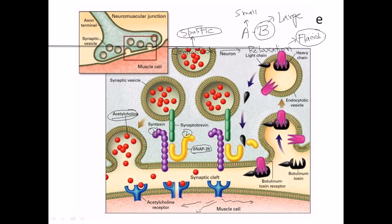After binding, a signal triggers invagination and vesicle formation through the process of receptor-mediated endocytosis. Once endocytosis is complete, the large B subunit remains attached to the receptor, while the small A subunit is cleaved and released out into the cytoplasm of the axon terminal. This is a very important stage — the active A subunit is now free in the cytoplasm and will cleave the SNAP25 protein.